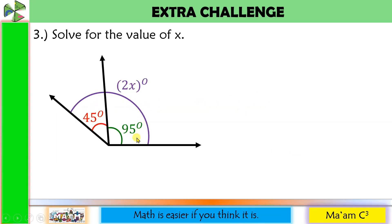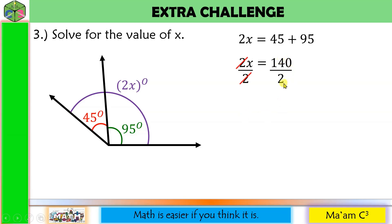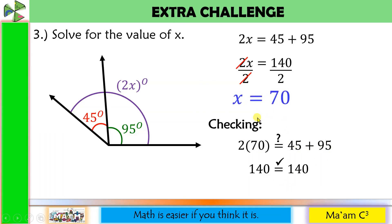Another one: 45 degrees and 95 degrees are adjacent angles — they share a common ray and a common vertex. Their total measure equals 2X. So we add 45 and 95 and equate to 2X. 45 plus 95 is 140. Dividing both sides by 2, X equals 70. Checking: 2 times 70 is 140, and 45 plus 95 is 140. They are equal. Therefore, X equals 70 is correct.